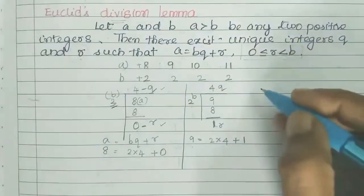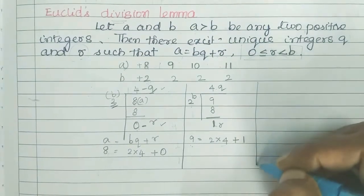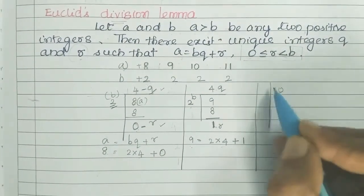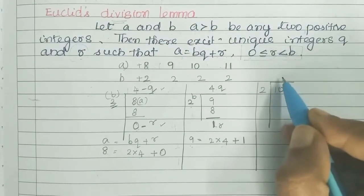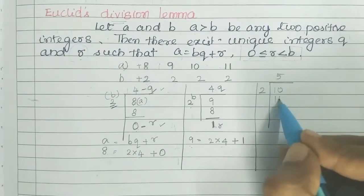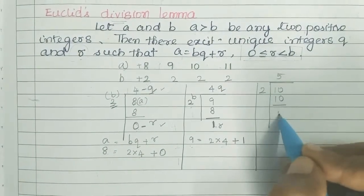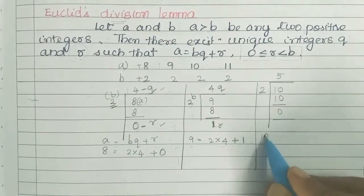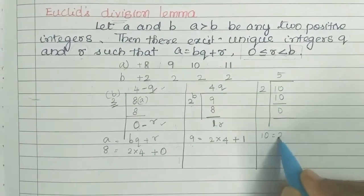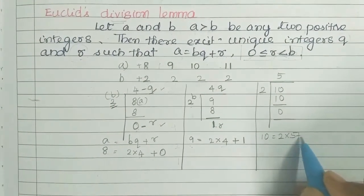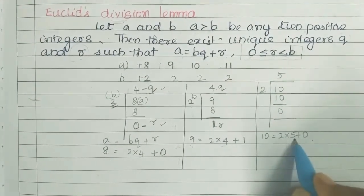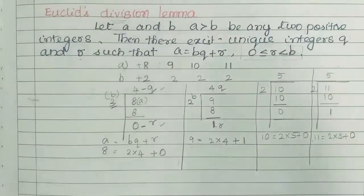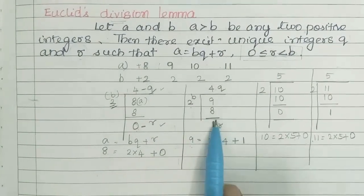Now we will take a equals 10. We divide 10 by 2. 2 fives are 10, balance is 0. So 10 equals 2 into 5 plus 0. So 2 times 5 is 10, and 10 plus 0 is 10. Let's check all 4 examples.